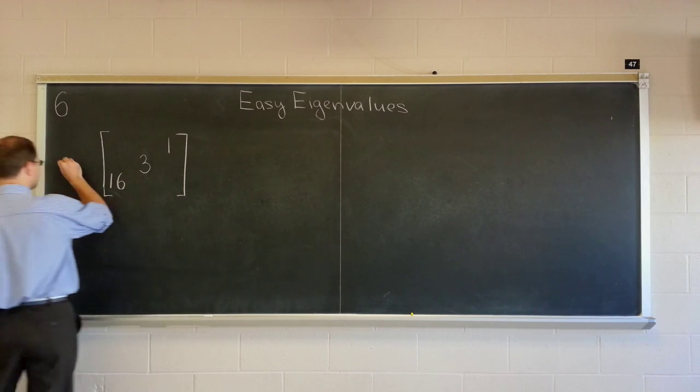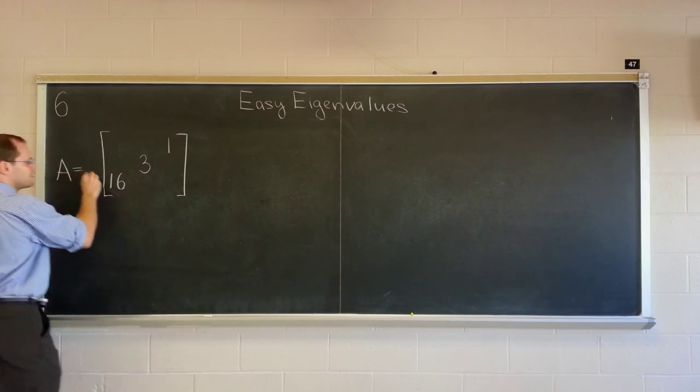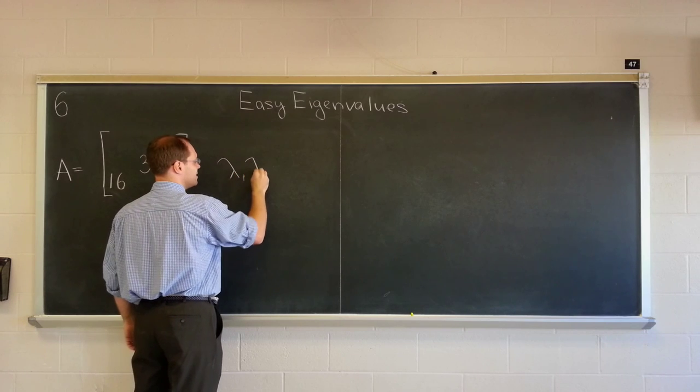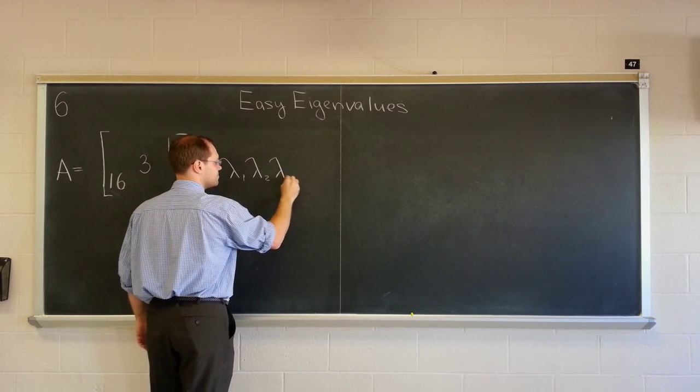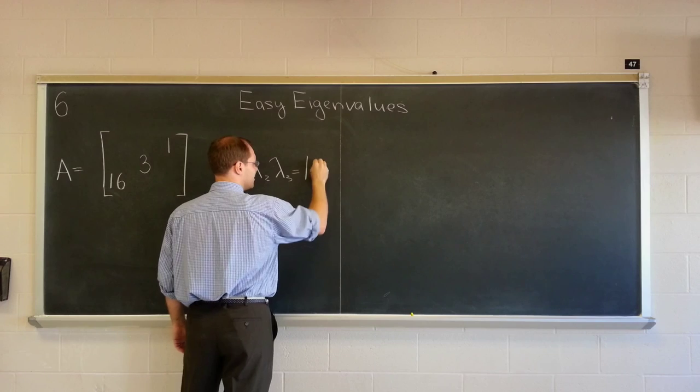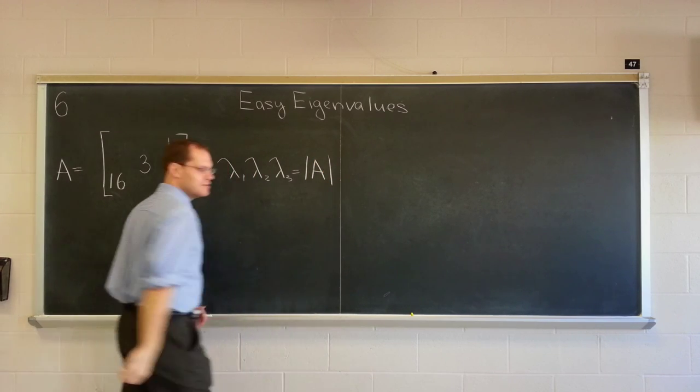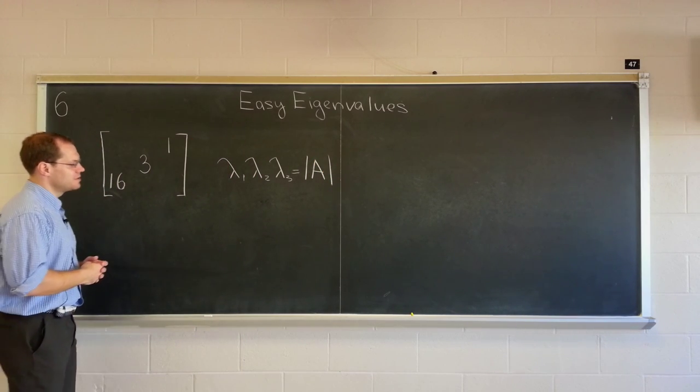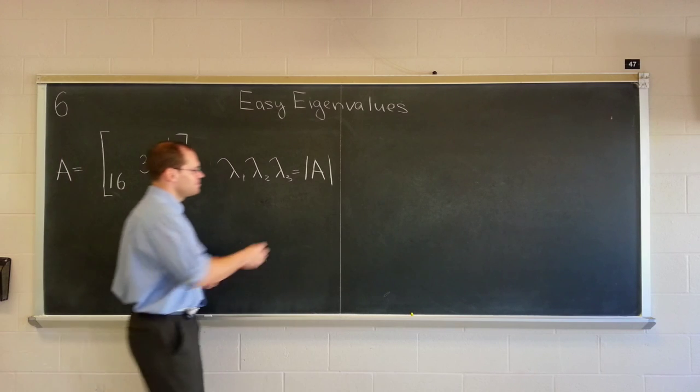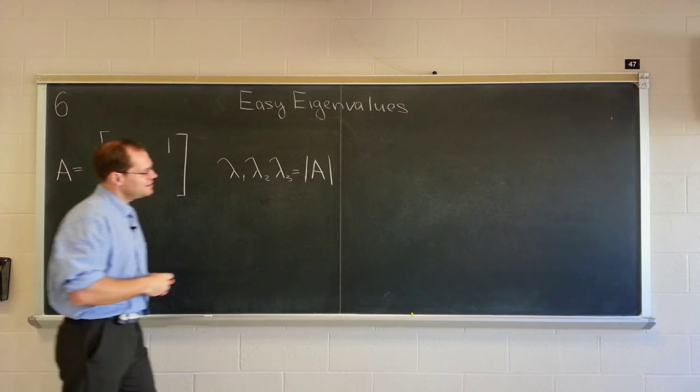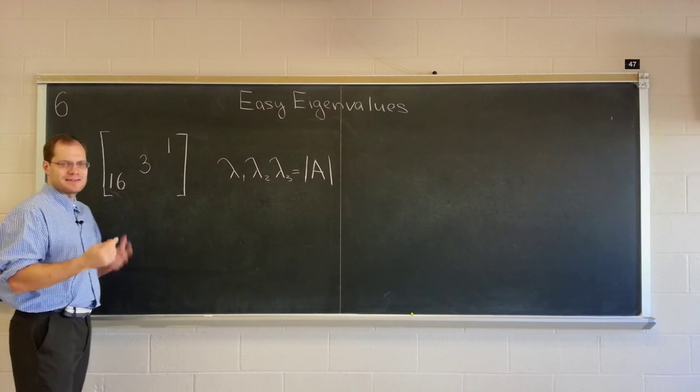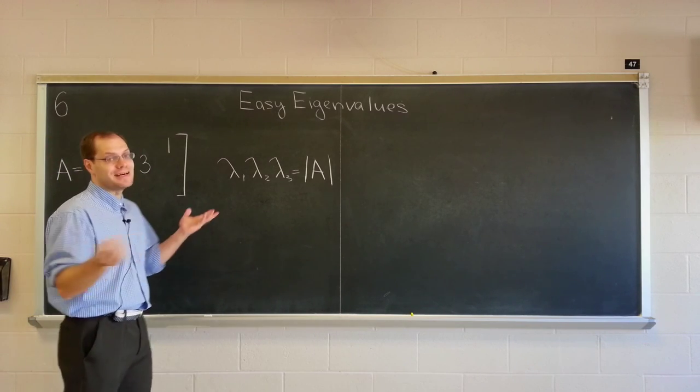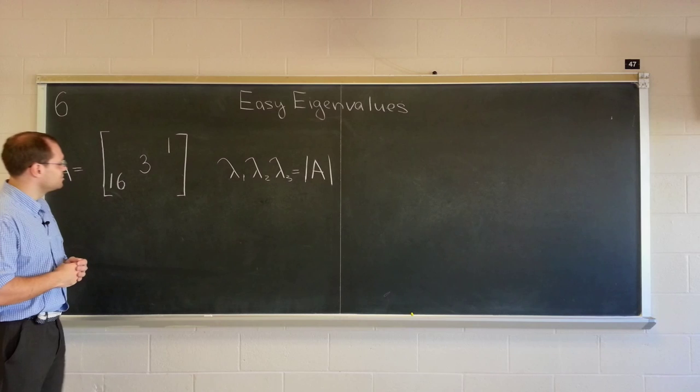So if this is the matrix A, then what you can state is that the product of the eigenvalues equals the determinant of A. It's beautiful, it can be explained similarly. Well, you can't really compare. I really like the trace property, I'm partial to that one.